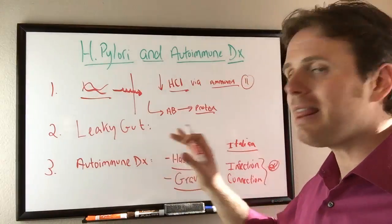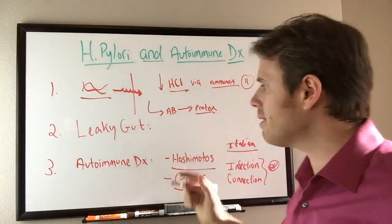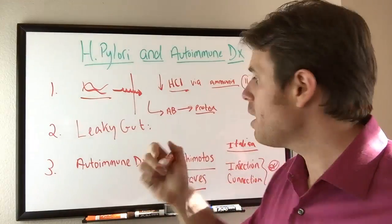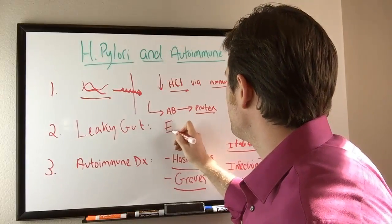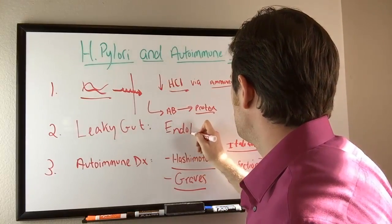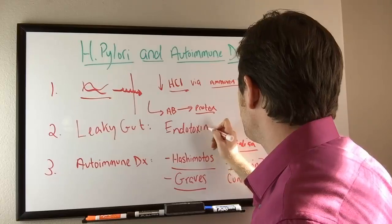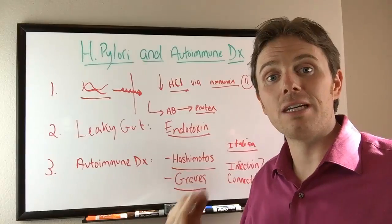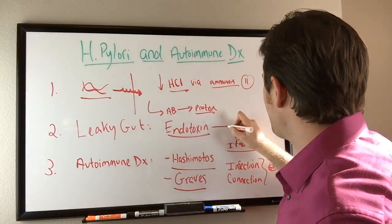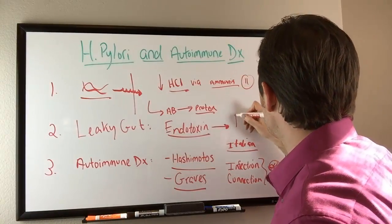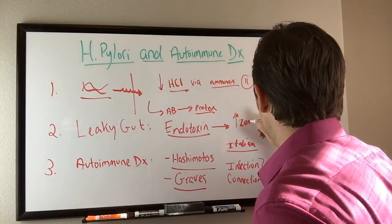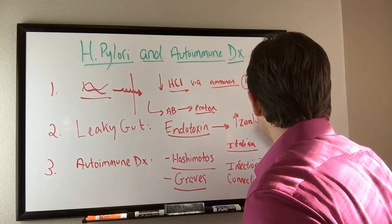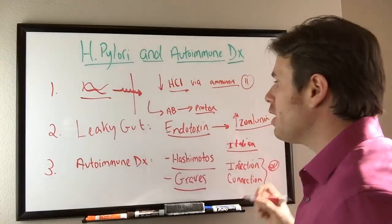But one of the main things that H. pylori has, it's a gram-negative bacteria meaning it has two cell walls but it also has a compound known as endotoxin. And endotoxin is a specific toxin and it can affect the gut. It can create inflammation in the gut and endotoxin can actually increase this compound known as zonulin. And what they find with zonulin, zonulin can open up the tight junctions in the gut.